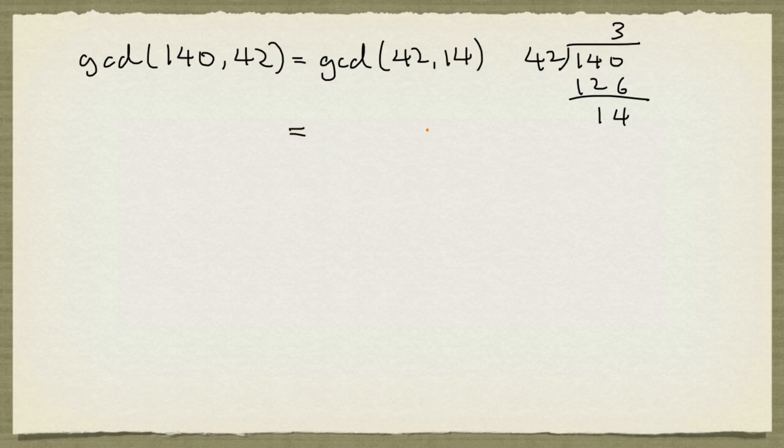Now we can apply the second observation again and say that this is equal to the greatest common divisor of 14 and the remainder of 42 divided by 14.